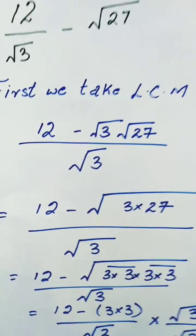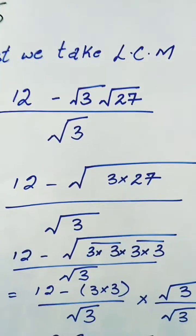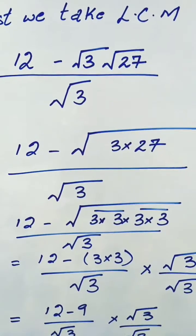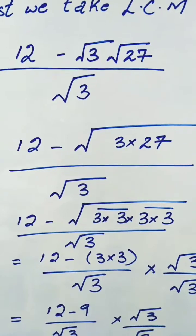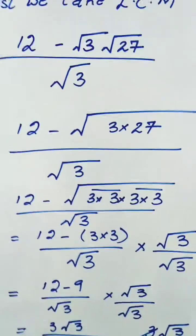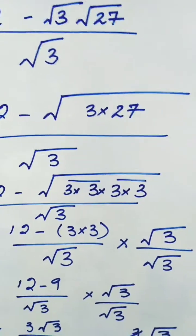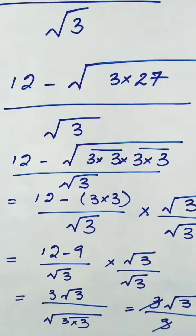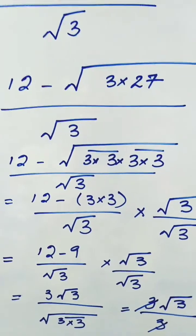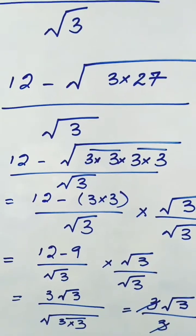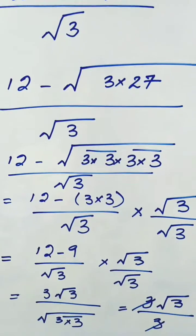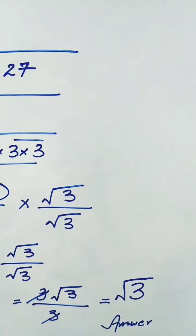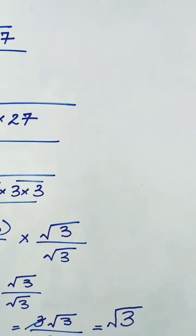We take 3 and 27 under one root and their factors become 3 × 3 × 3. Now both the 3s come out of the root as they are pairs. We have 12 minus 3 × 3 divided by root 3 after simplification. To remove root 3 from the denominator, we multiply and divide by root 3. We now have 12 minus 9, divided by root 3 × root 3 × root 3. Root 3 in the denominator comes out as a pair, leaving us with 3√3 over 3.